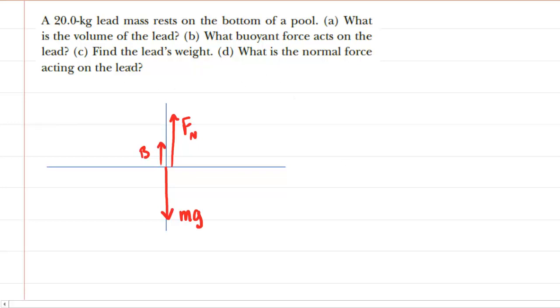In part A of the question, we are asked to determine the volume of a 20 kilogram lead mass that is at rest on the bottom of a pool. We have learned in this chapter that the density of the lead would equal its mass divided by its volume. We need to solve this equation for the volume.